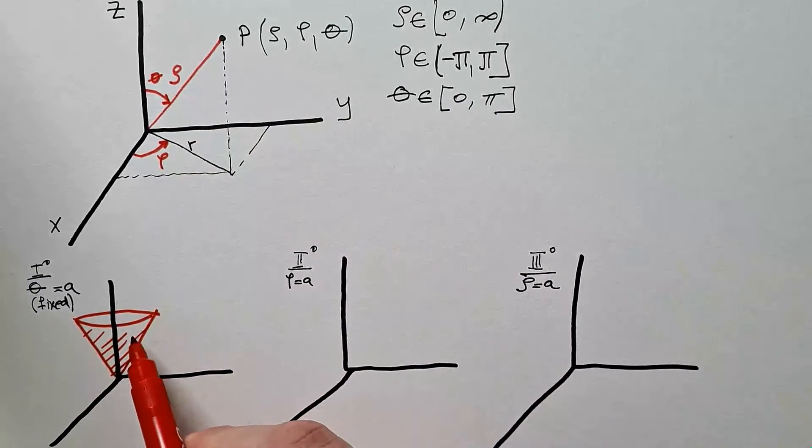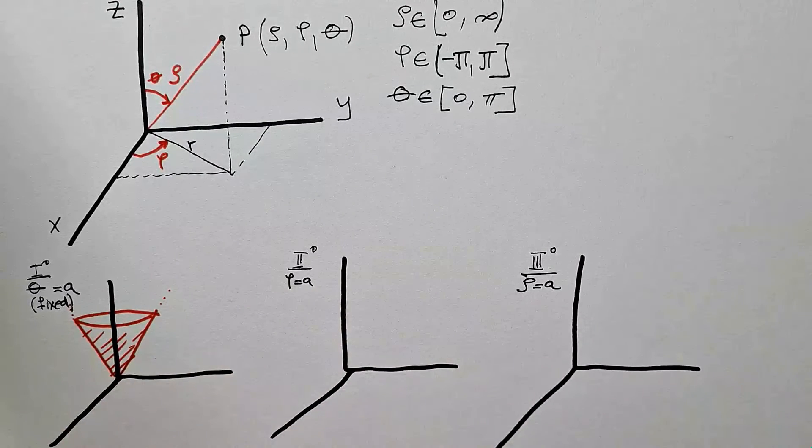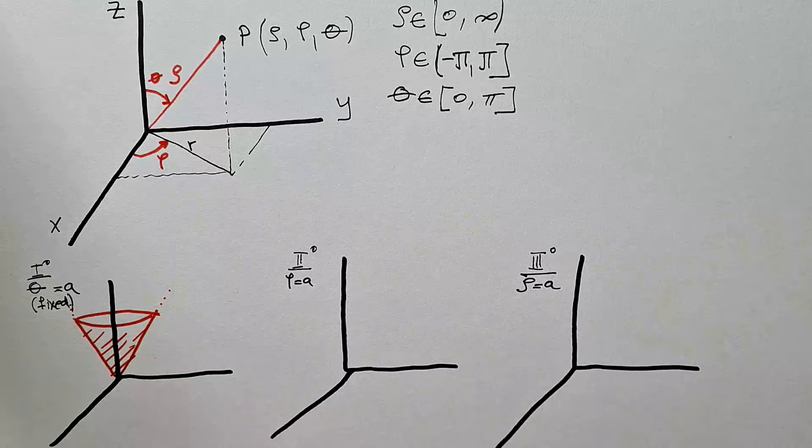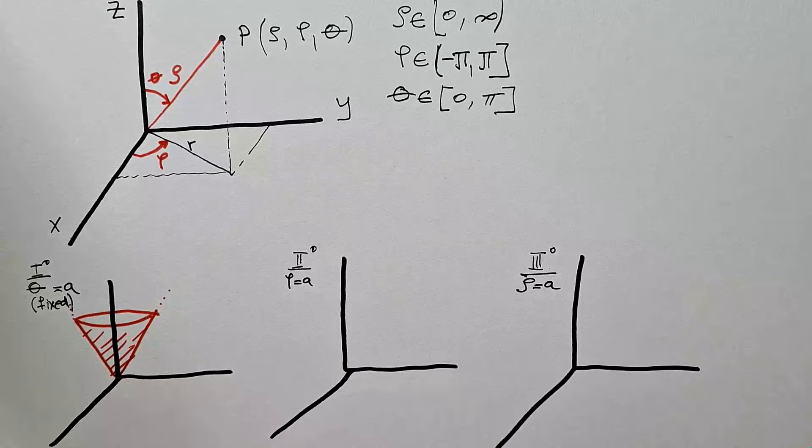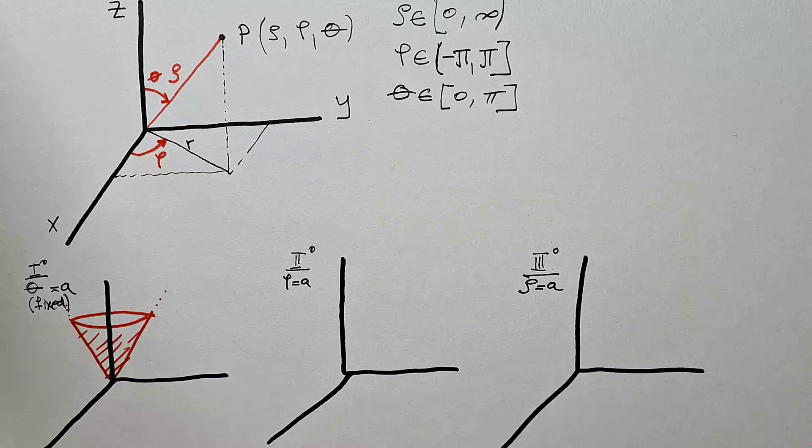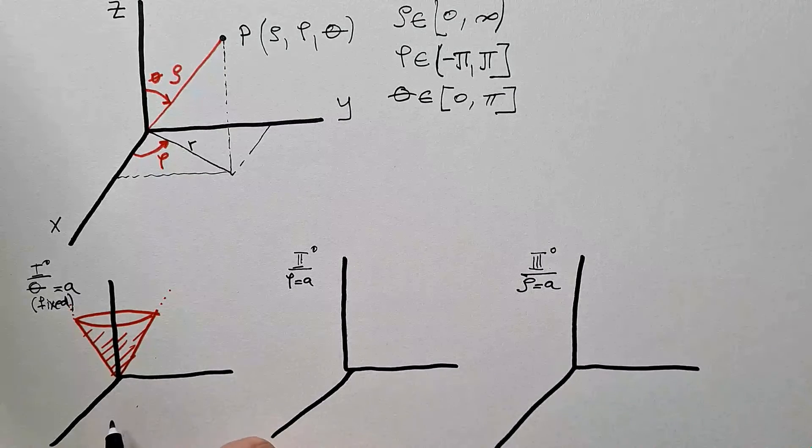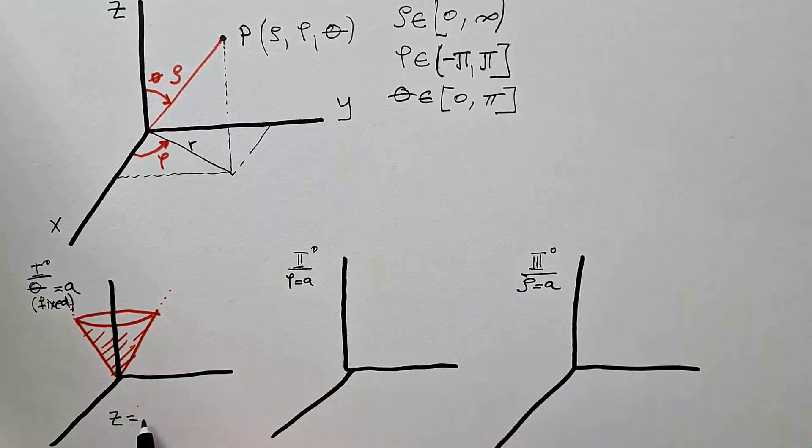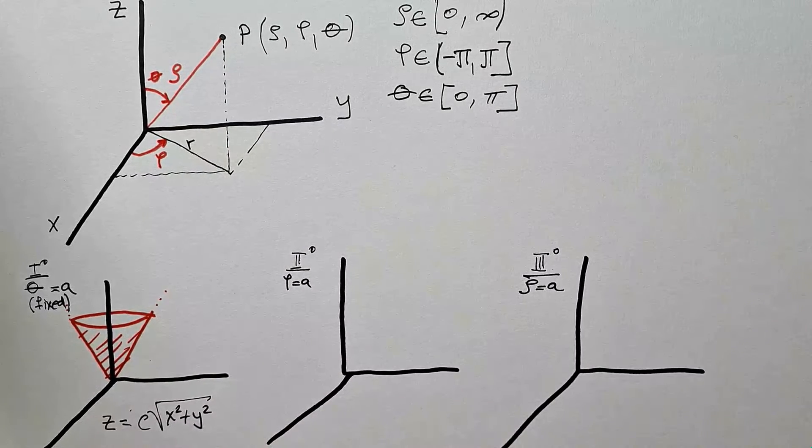And the cone goes all the way to infinity, but I have to stop somewhere. Therefore, you can see that this equation, theta equals A, is an equation of a cone in spherical coordinate system, indeed, very simple equation. In Cartesian coordinate system, the equation would be more complicated, namely, it would be z is c times square root of x squared plus y squared.